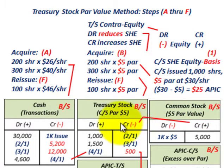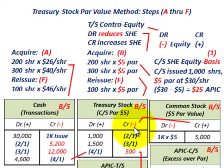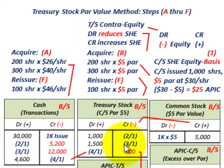Looking at treasury stock in comparison to the common stock account: in treasury stock, a debit is plus. Moving over to common stock, a debit is minus. Similarly, a credit minus in treasury stock corresponds to a credit plus in common stock. That's what we're talking about with contra accounts.